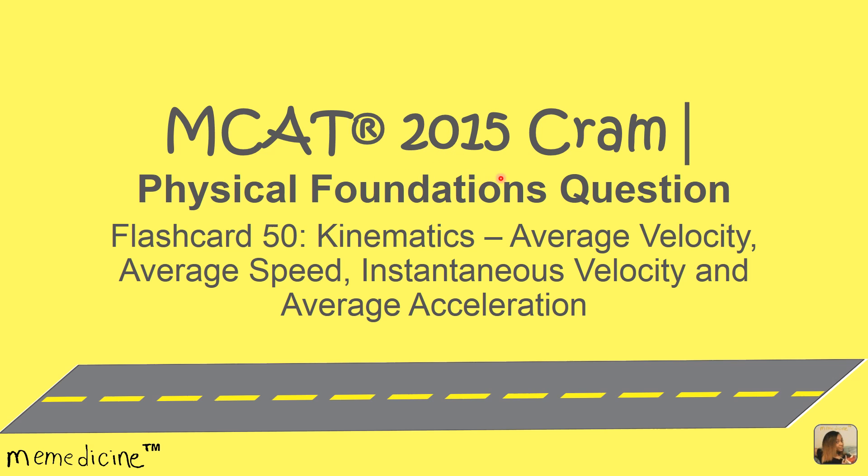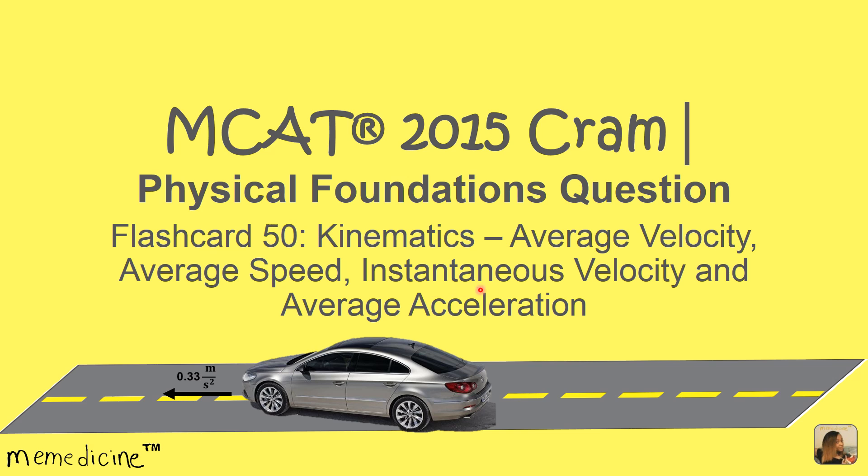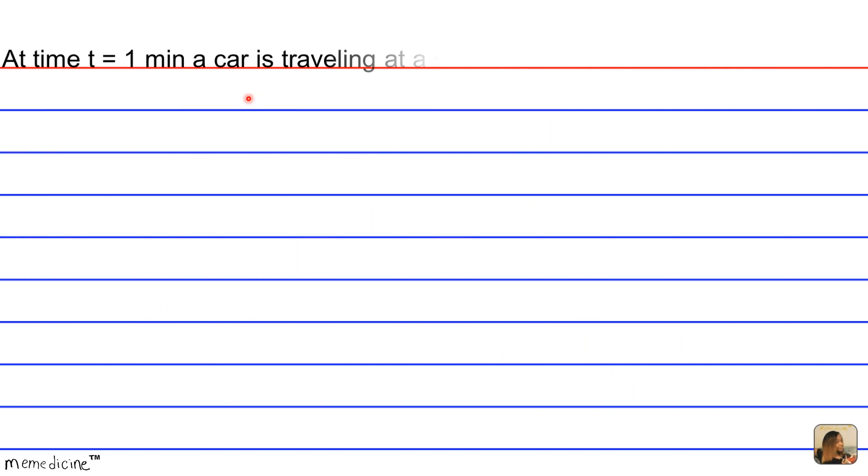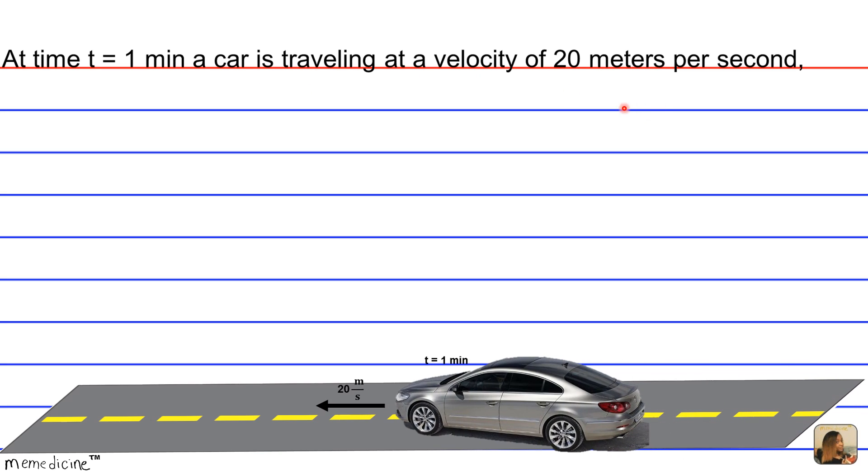MCAT 2015 CRAM physical foundations question flashcard 50: kinematics, average velocity, average speed, instantaneous velocity, and average acceleration. Let's delve into the question. At time t equals one minute, a car is traveling at a velocity of 20 meters per second.